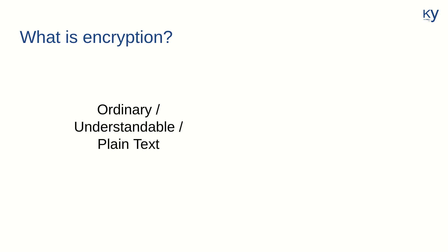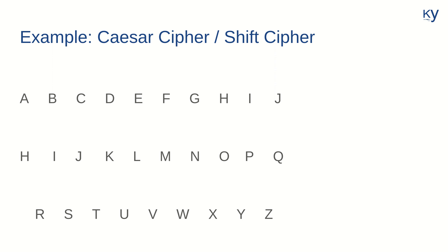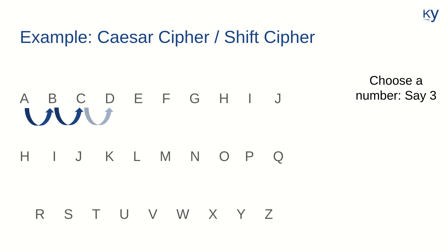So what exactly is encryption? In encryption, we take our plain text — the text that we can easily understand — and transform it into a coded form, or into a cipher, what we call cipher text or encrypted text, so that it is harder to understand. One simple example of how encryption works is the famous Caesar cipher or shift cipher. You have the English alphabet and you choose a number, let's say three. Whenever we encounter a letter in our actual message, we replace that letter with a letter that comes three places afterwards. So a shifted one place gives b, another shift gives c, another shift gives d.